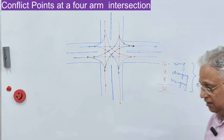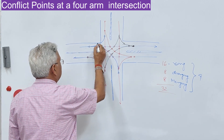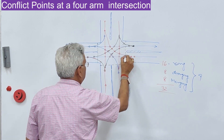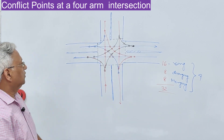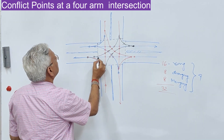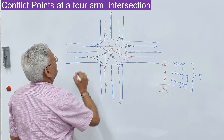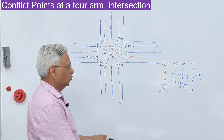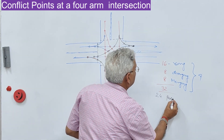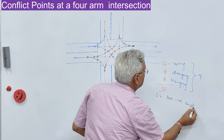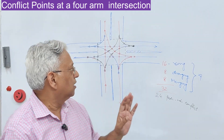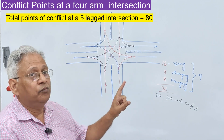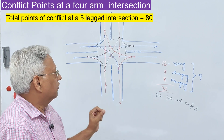If pedestrians are also present at this intersection, pedestrians will cross at their zebra crossings on each leg. On one leg, there are six points of pedestrian-vehicle conflict. Six multiplied by four legs gives twenty-four points of pedestrian-vehicle conflict. That is how movement at an uncontrolled two-way, two-lane road crossing is dangerous — 32 vehicle-vehicle conflict points and 24 pedestrian-vehicle conflict points.